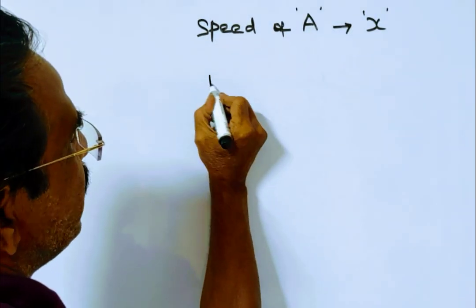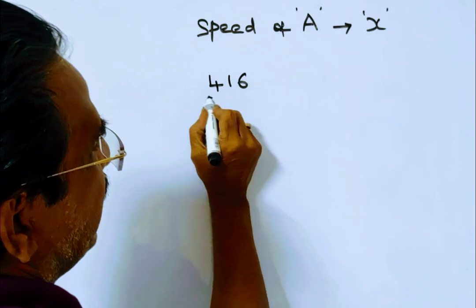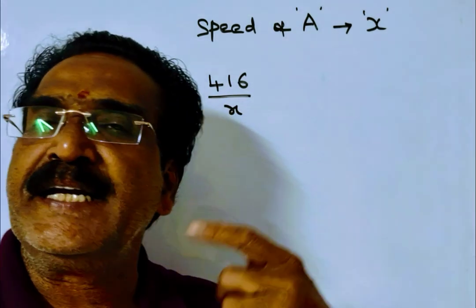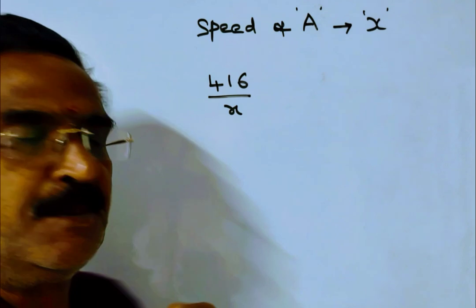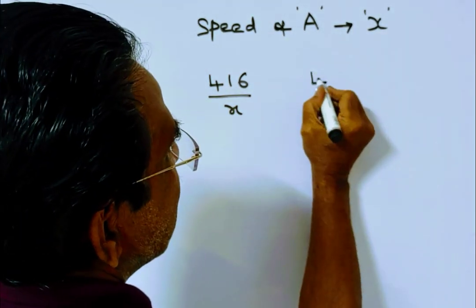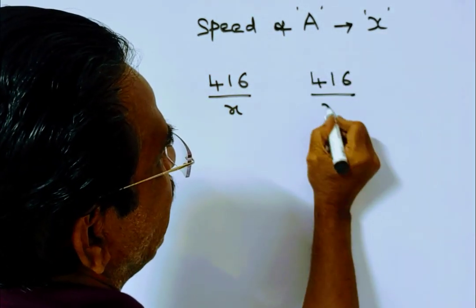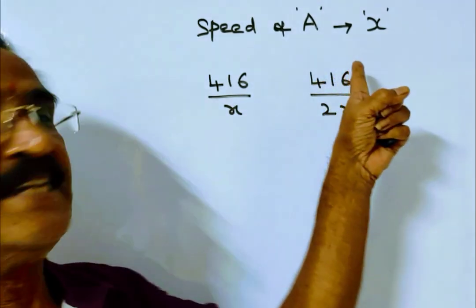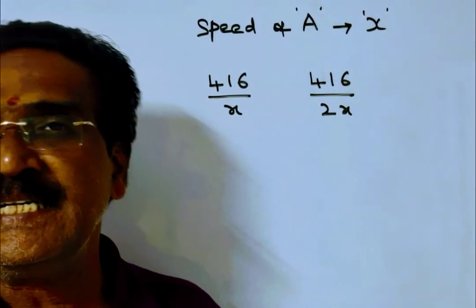Friends, 416 by X is the time taken by train A at normal speed. This is the time taken by train A when the speed is doubled.